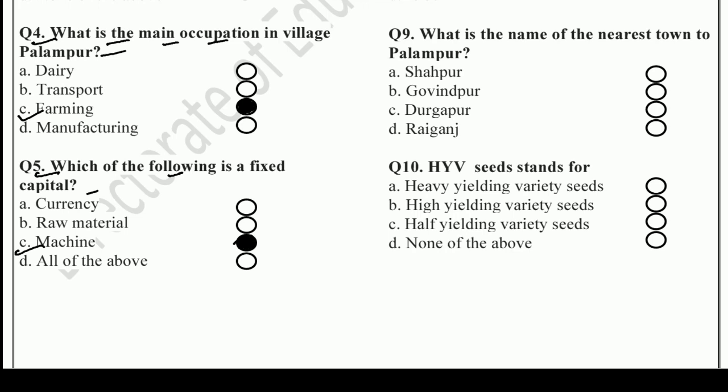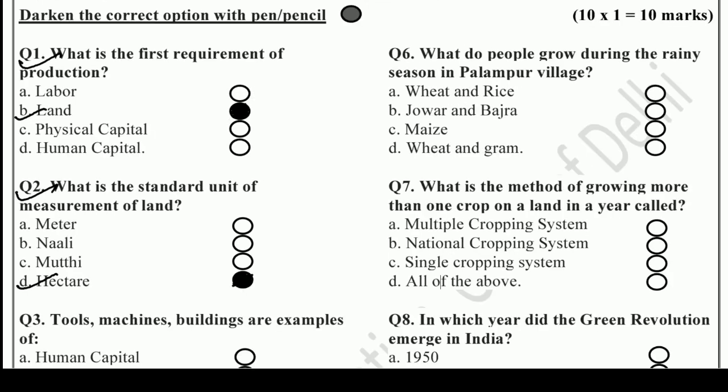Question number 6: What do people grow during the rainy season in Palampur village? Options include Wheat and Rice, Jowar and Bajra, Maize, and Wheat and Gram. Wheat cannot be a rainy season crop. The right answer is B — Jowar and Bajra. You have to fill in and blacken that circle.